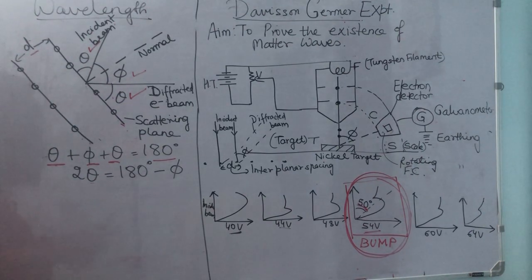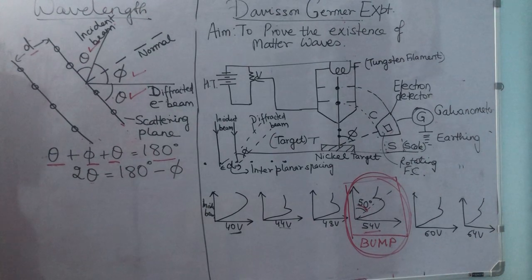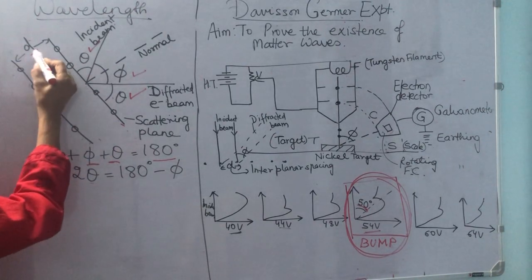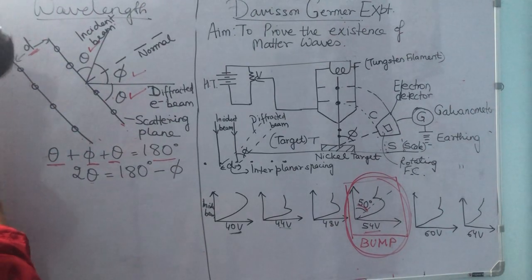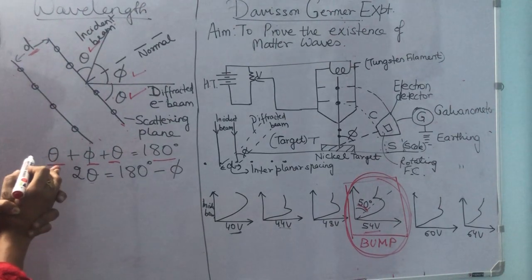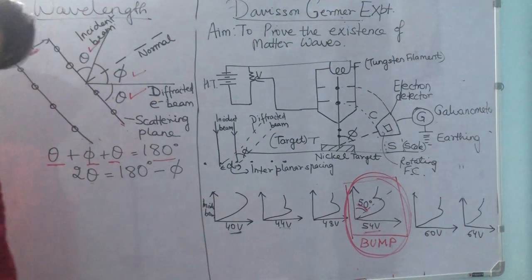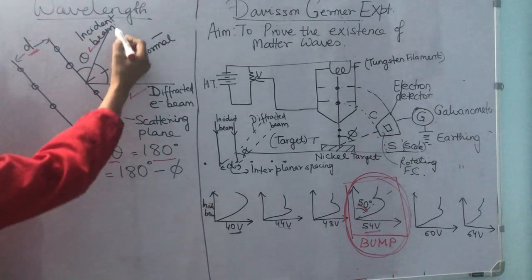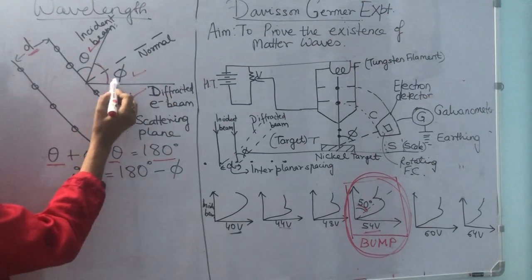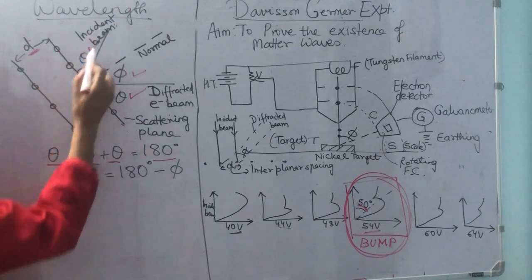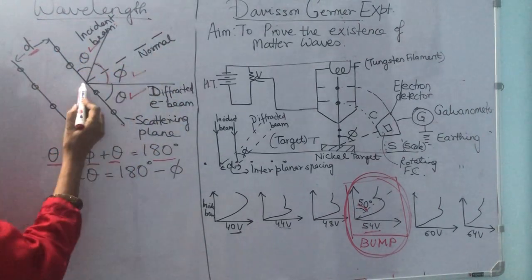We will note that both values are the same, hence the experiment is verified. The target has an interplanar spacing D of approximately 0.091 nanometers. This is the azimuthal angle phi, and we draw a normal between the incident beam and diffracted beam.